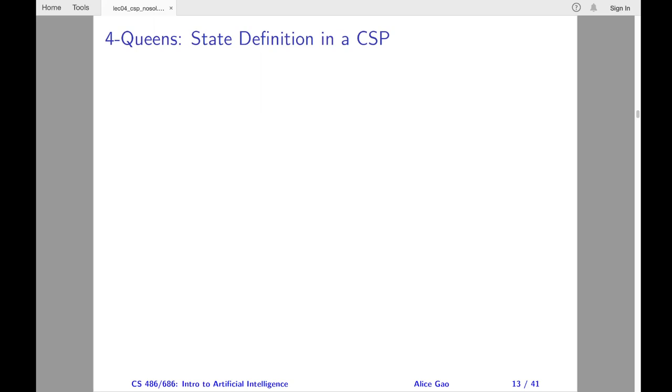We will make an assumption that there is exactly one queen in each column. Having assumed this, we no longer need to keep track of the column positions of the queens. We also don't have to worry about the column constraints. Here are the details.